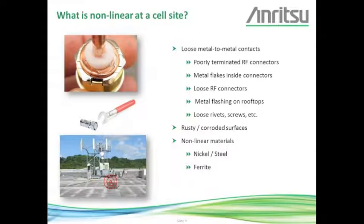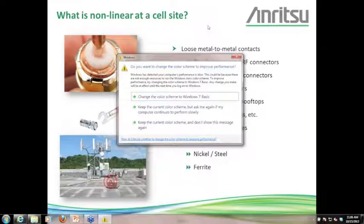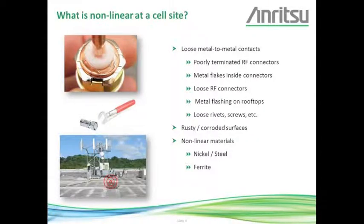What at a cell site might cause a nonlinear junction? The most common are metal-to-metal contacts or loose metal-to-metal contacts. This is caused by poorly terminated RF connectors, flakes of metal inside the connectors, loose RF connections where the connector was not tightened correctly, as well as metal flashing on rooftops, screws, and things that are loose inside the antenna like rivets. It can also be caused by materials that are inherently nonlinear, like nickel, steel, and ferrite.